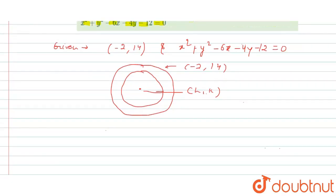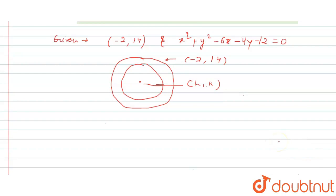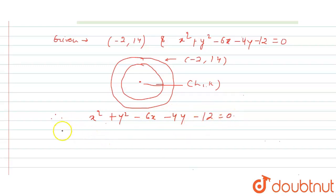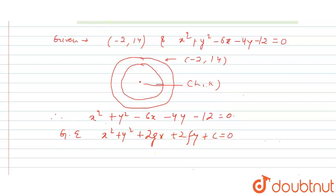We have to find the center of the given circle equation, because both circles share the same center since they are concentric. The given equation is x² + y² - 6x - 4y - 12 = 0. The general equation of the circle is x² + y² + 2gx + 2fy + c = 0. On comparing, we know that the center of this circle is (-g, -f).